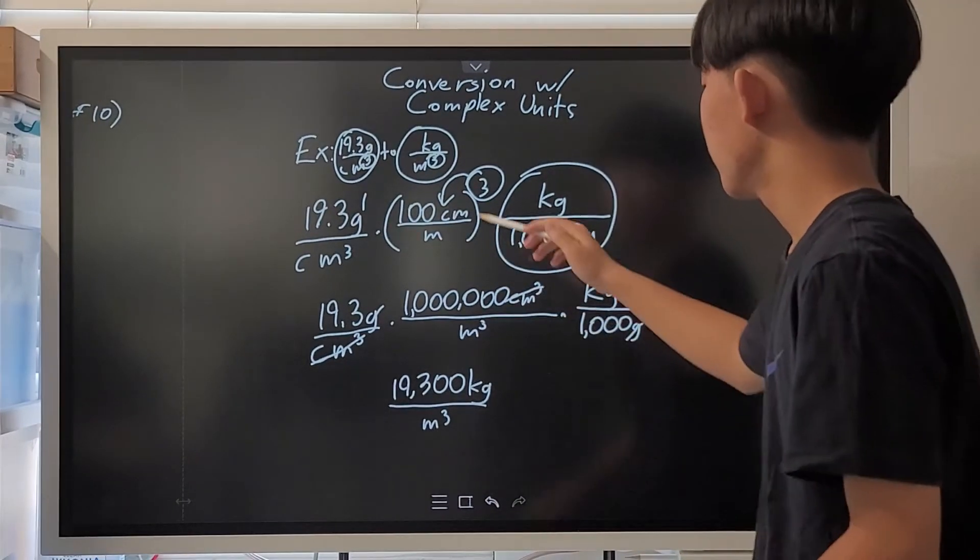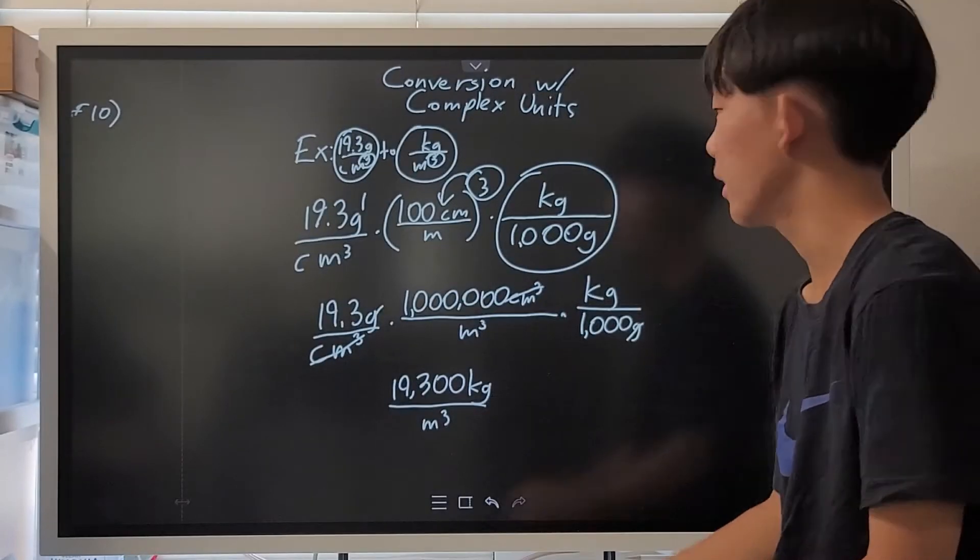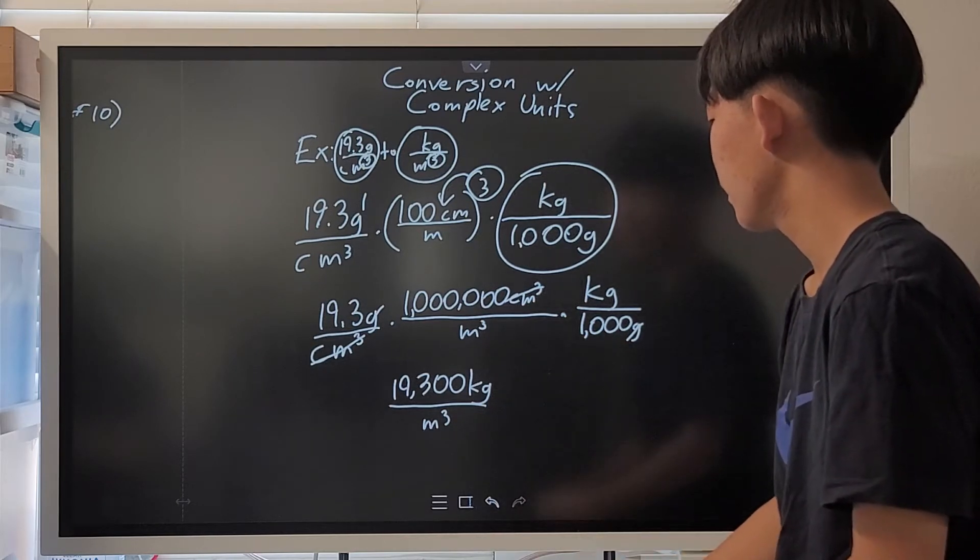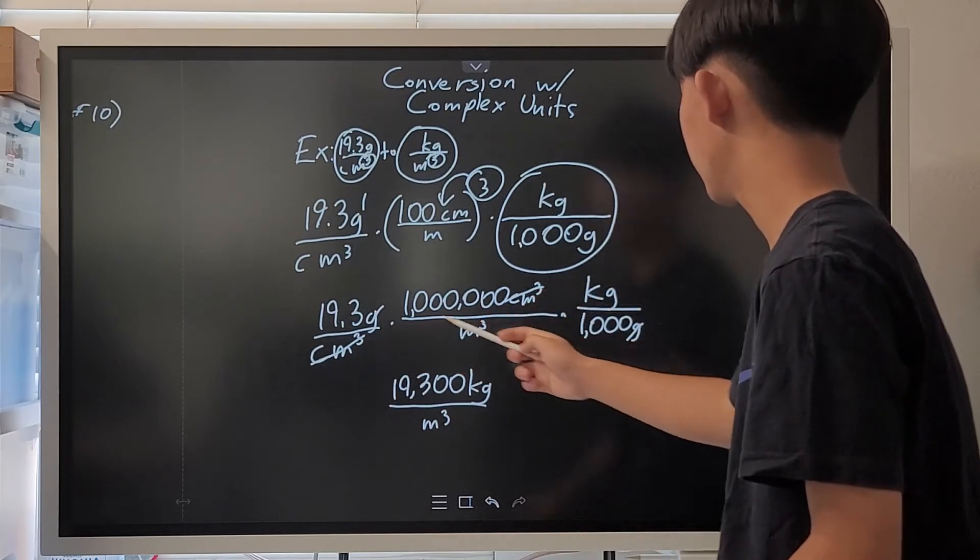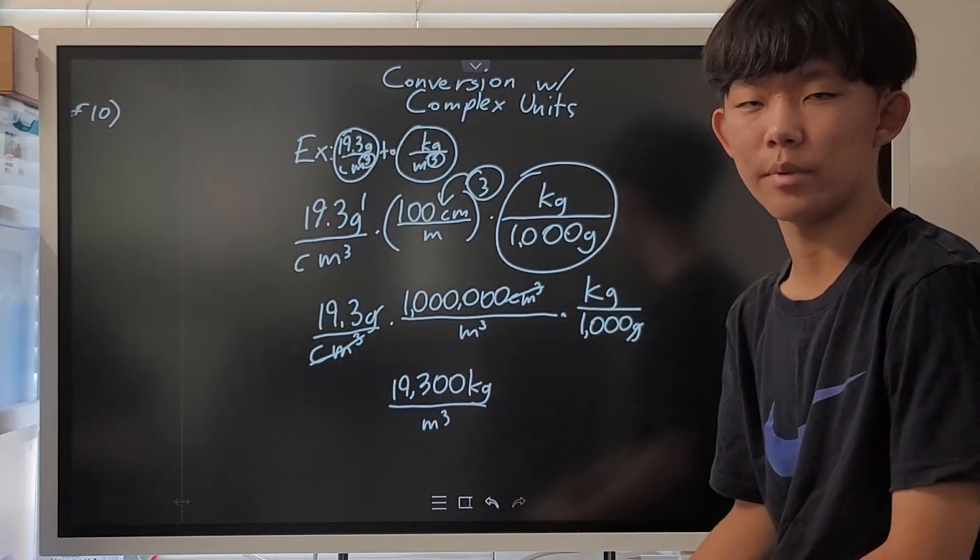When you do the math, the 100 centimeter per meter will cube, and we get 1 million centimeter cubed per meter cubed. And then the centimeter cubed and the grams cancel, and we get 19,300 kilograms per meter squared.